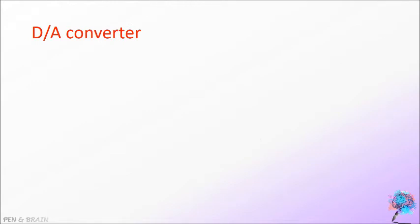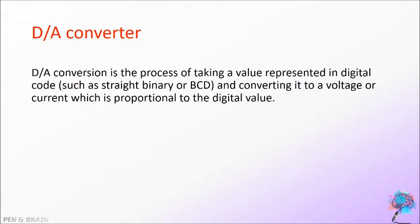D by A converter. The digital to analog converter is also known as D by A converter, D to A converter, etc. D by A conversion is the process of taking a value represented in digital code such as straight binary or BCD and converting it to a voltage or current which is proportional to the digital value.